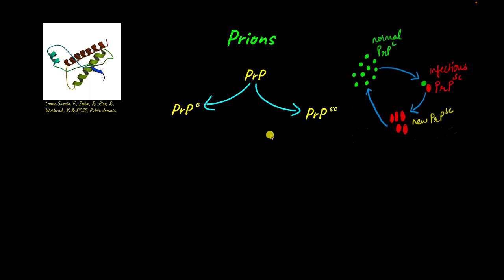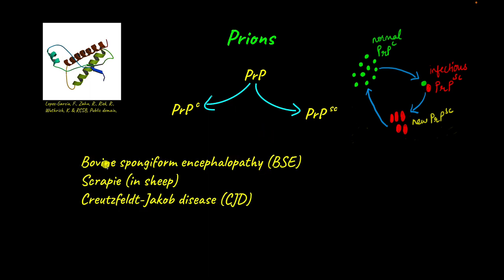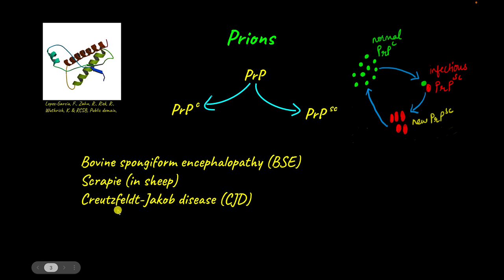Examples of prion diseases include bovine spongiform encephalopathy or BSE in cattle, scrapie in sheep, and the human variant of BSE which is Creutzfeldt-Jakob disease. Let's just remember it as CJD because this is quite difficult to say.